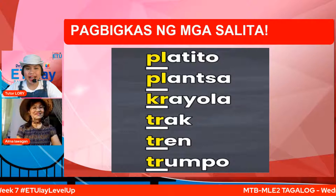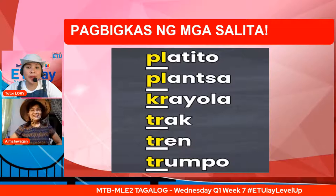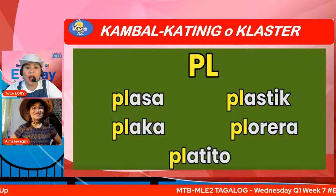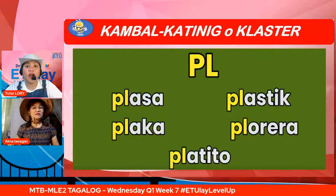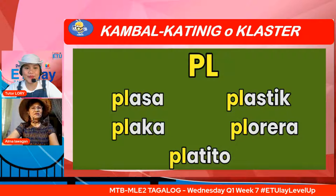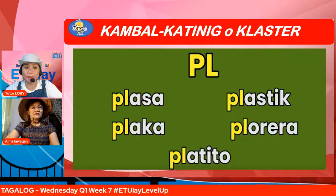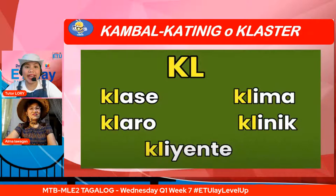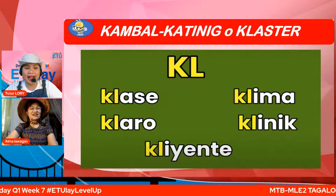Meron pa kaming inihanda na mga halimbawa ng kambal katinig ni Tutor Alma. Basahin natin ang mga ito. Ang una ay kambal katinig na PL — ang tunog niya ay PL: plasa, plastic, plaka, florera, platito. Ang susunod ay KL: klase, klima, klaro, klinik, kliyente — ito ay may kambal katinig na KL. Ang susunod naman ay BR: braso, brusco, Brenda, brigada, brillante.